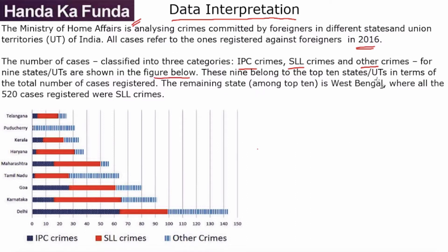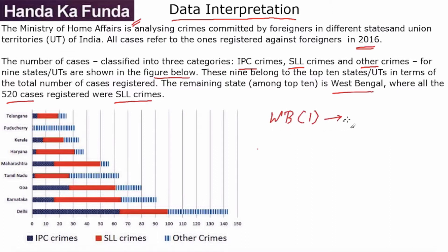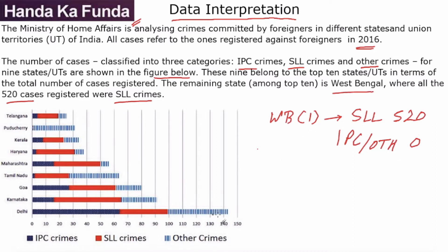These nine belong to the top 10 states and union territories in terms of the total number of cases registered. Delhi is essentially the biggest with around 142 or 143. The remaining state among the top 10 is West Bengal, where all 520 cases registered were SLL. So West Bengal is overall rank one because it has 520 cases of SLL whereas IPC as well as others are zero. The total number for Delhi is 142, so West Bengal wins.